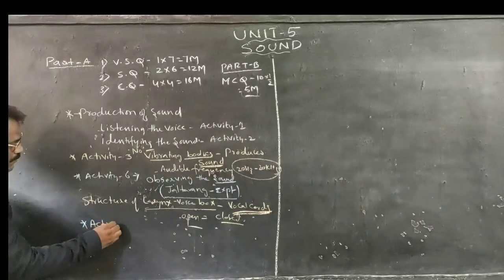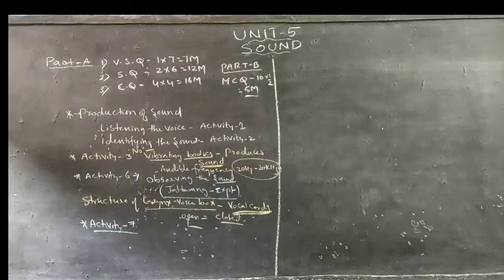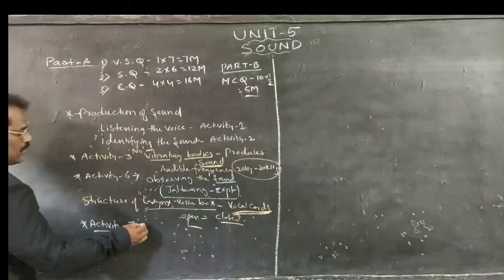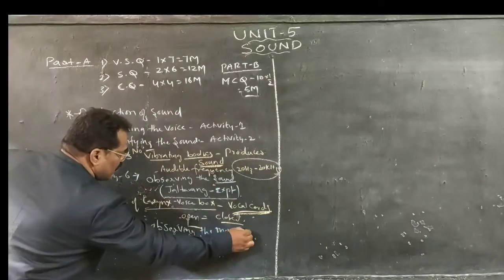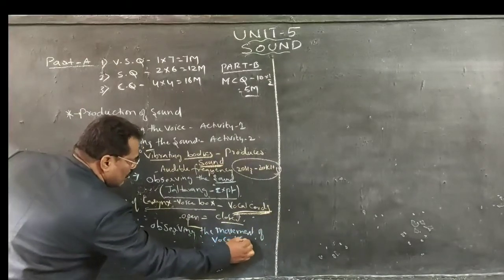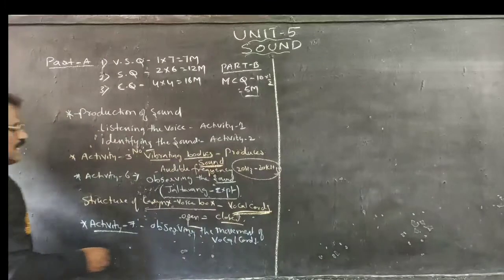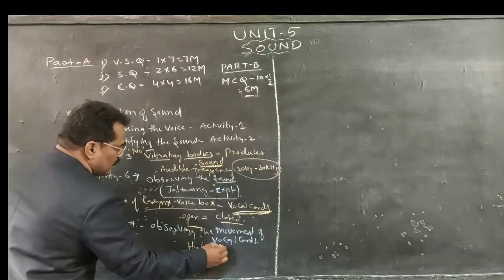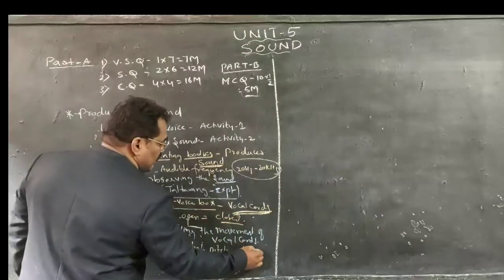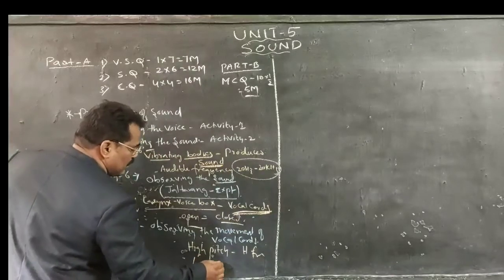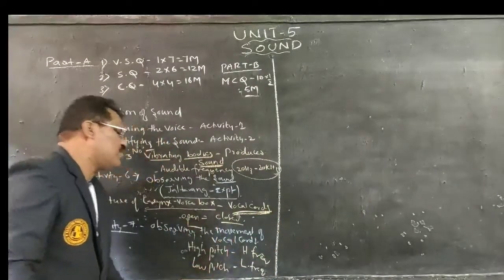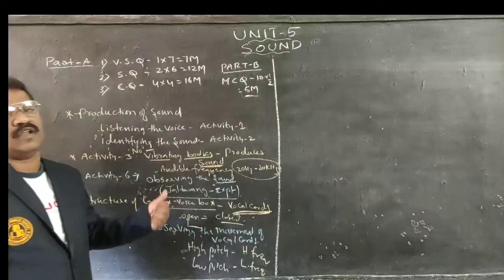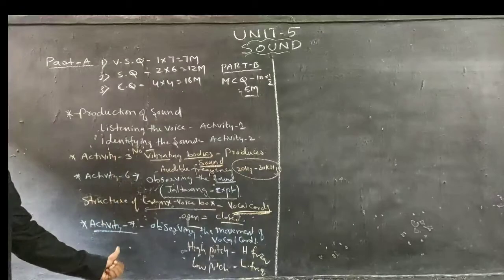Activity 7 gives information about observing the movement of vocal cords and how they produce different types of sound. As the vocal cords move, high pitch sound can be heard if a particle is vibrated with high frequency, and low pitch sound can be heard if vibrating with low frequency. Based upon the movement of vocal cords, high pitch as well as low pitch sound can be heard.